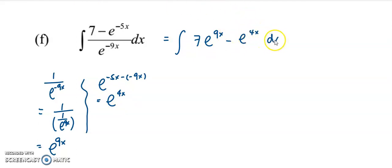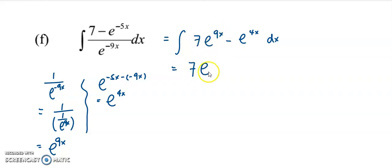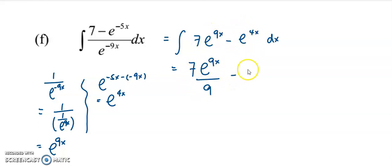Now we can start to integrate. Integrate 7·e to the power of 9x — the 7 is a coefficient, copy it down, and integrate e to the power of 9x by copying down e to the power of 9x and dividing by 9. For the second term, integrate e to the power of 4x the same way — copy down the exponential function and divide by 4, plus constant C.